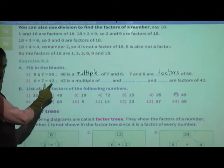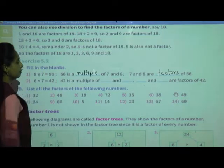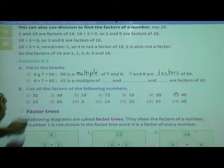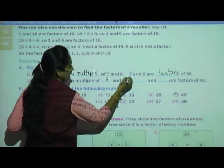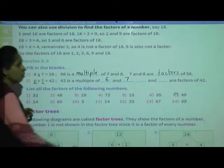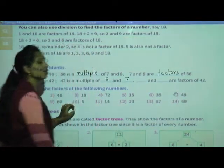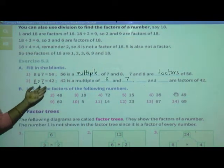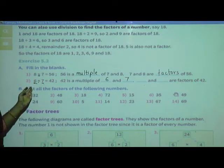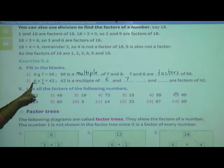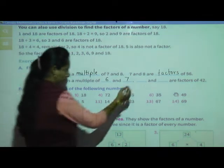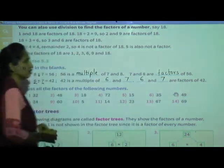Now see the second: 6 multiplied by 7 equals 42. So 42 is a multiple of 6 and 7. Whenever we multiply two numbers to get the product, those numbers are called factors of the given number. So 6 and 7 are the factors of 42.